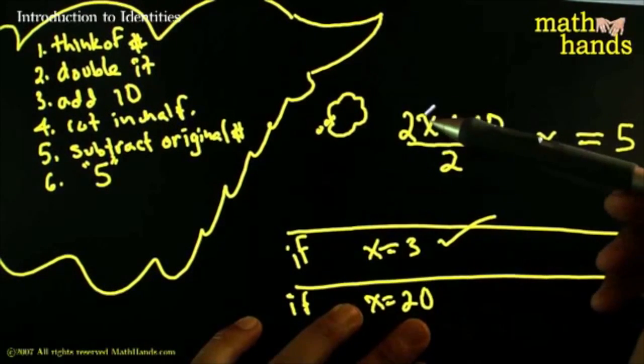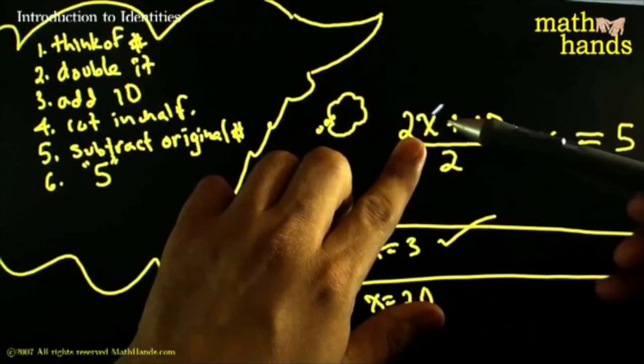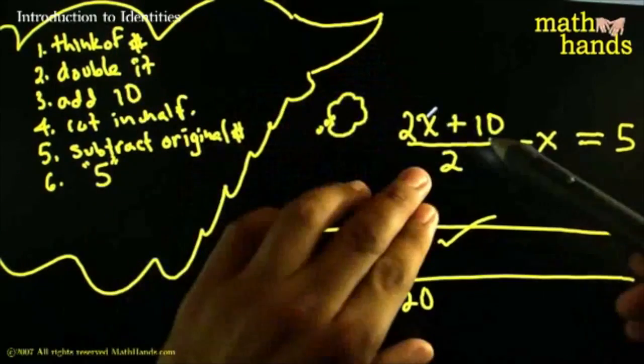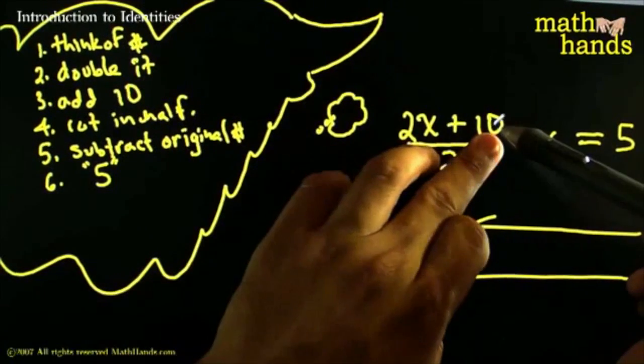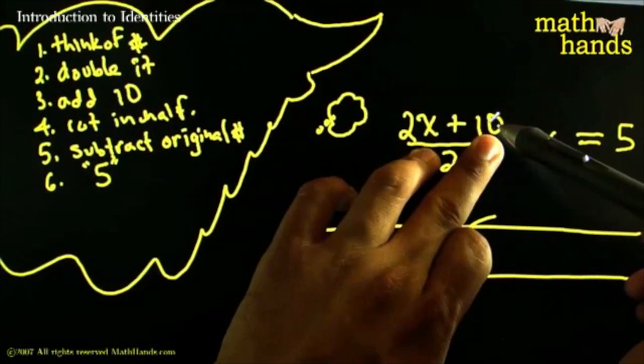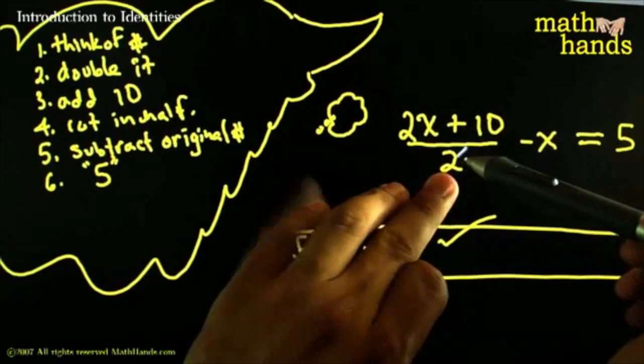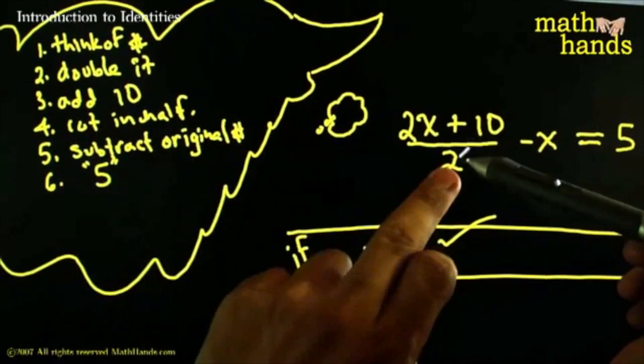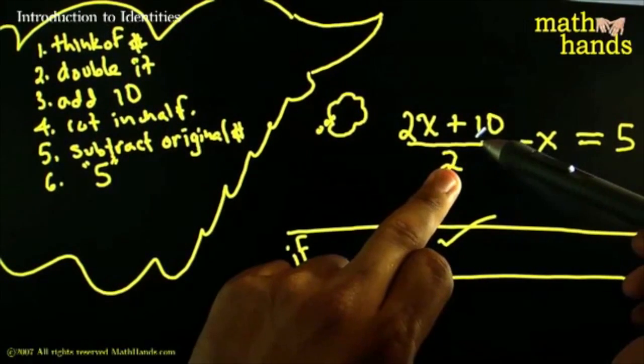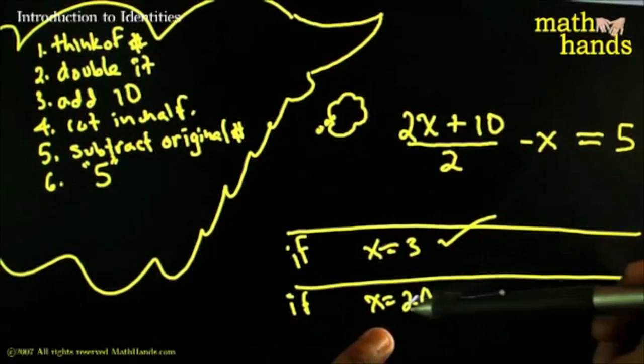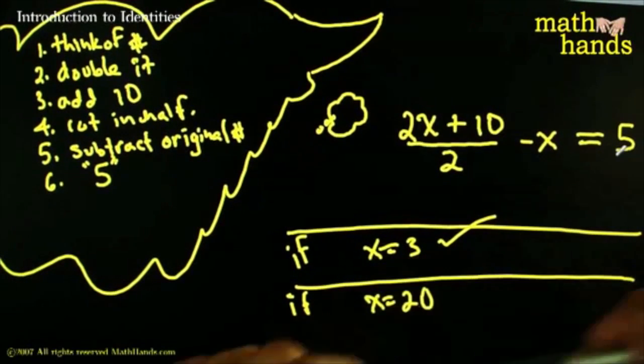Let's try it. 20 times 2. How much is 20 times 2? Use your calculator. 40 plus 10. That's 50. Cut in half. Follow the instructions. Cut in half. That's 25. And subtract the original number that you thought of. Subtract the 20. That gives you 5.